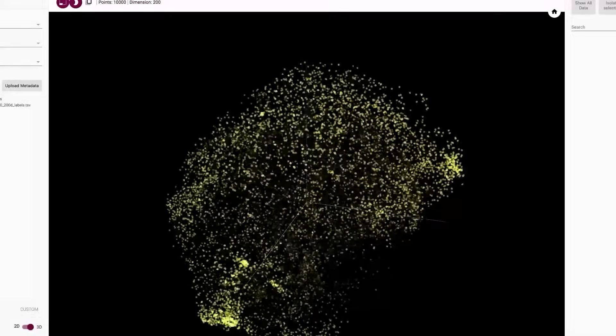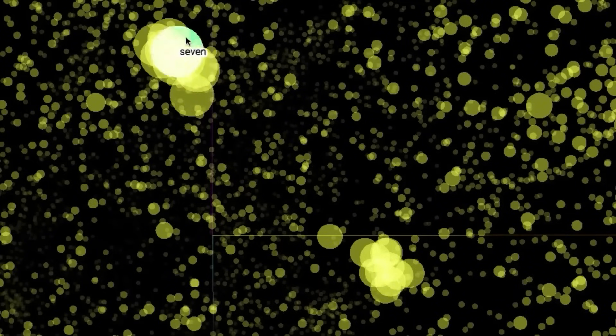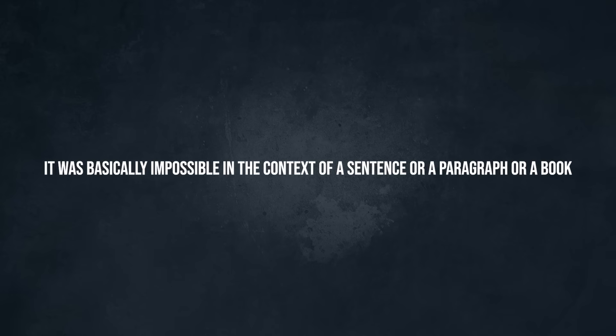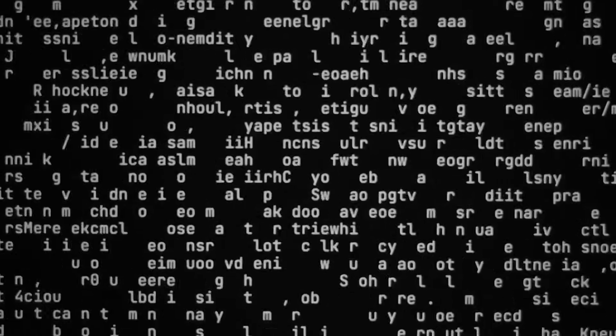Before the transformer, there was an extremely difficult problem plaguing their language processing task. The problem was, although training the models to understand and encode the semantic similarities between individual words was relatively easy, it was basically impossible in the context of a sentence or a paragraph or a book. How would you know which words influence which ones and to what degree? That's when researchers started writing rules, like the words that are closer are more likely to affect each other. Or rules based on the classical language grammar, separating verbs, adjectives, pronouns, and attaching influence scores to them. As you can probably imagine, none of these sophisticated rules could actually capture the complex structure of human language. That's when the attention mechanism came to the rescue.